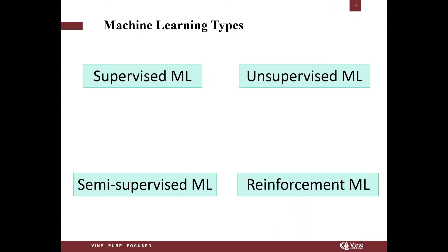Before getting more into the workflow, I want to talk about different machine learning types. We have supervised, unsupervised, semi-supervised, and reinforcement learning. In supervised machine learning, we're talking about having a dataset that is labeled or has an output associated with it. If you have a bunch of input features and you're trying to correlate those to one or multiple outputs, and your data is labeled, it is called supervised.